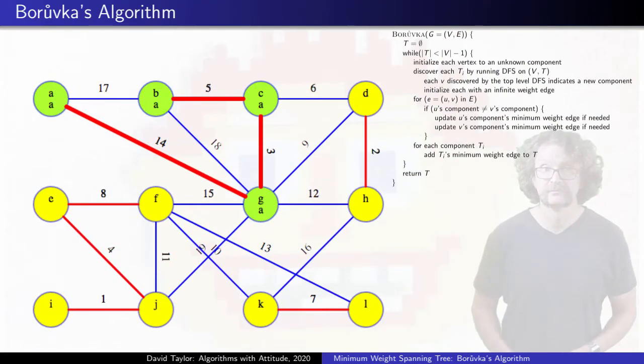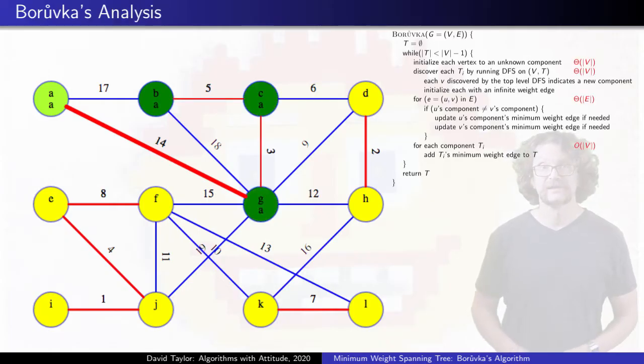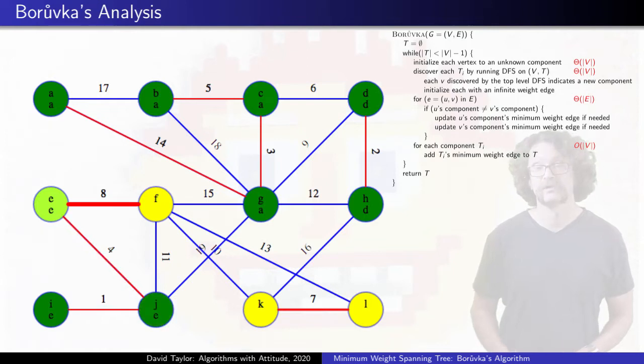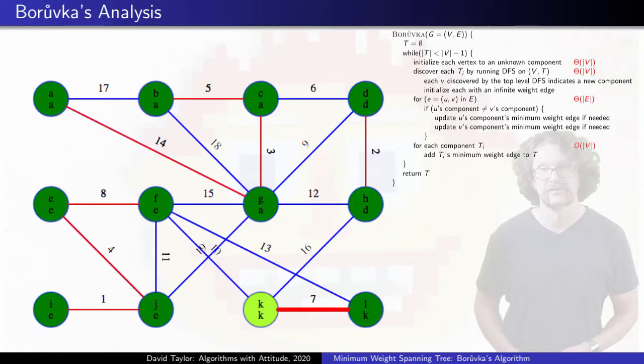As for run time, finding components takes time linear in the number of vertices, finding the minimum edge for each component takes time linear in the number of edges, and adding edges to the tree takes time linear in the number of components, which is bounded by the number of vertices. So each phase takes time linear in the graph size.